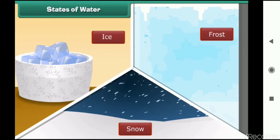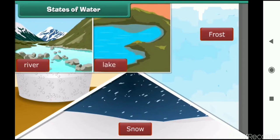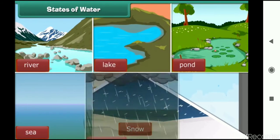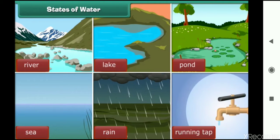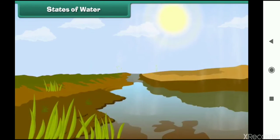You see liquid water in rivers, lakes, ponds, sea, when it rains, and the water coming out of a tap. Water vapor is a gas in the air. You can't see gas because it is invisible.